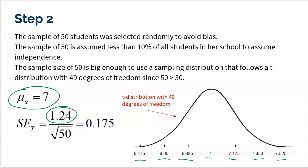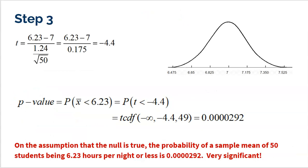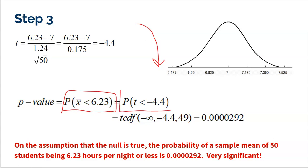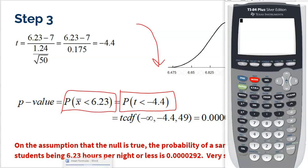Now comes my favorite part — finding where our sample fits in. Our sample mean was 6.23, which already looks pretty low on the distribution. To find the t-score, we take 6.23 minus the null of 7, divided by the standard error of 0.175, giving a t-score of negative 4.4. Negative 4.4 is way out in the left tail, so I'm already getting a strong feeling this is going to be pretty significant. The p-value is the probability that any other sample comes back lower than mine, which equals the probability that t is less than negative 4.4. I'll use t-cdf on my calculator: negative 99 to negative 4.4 with 49 degrees of freedom.